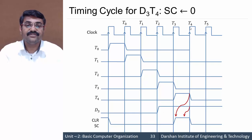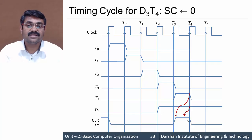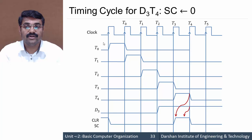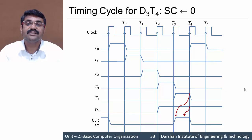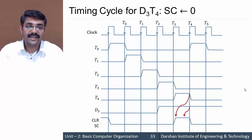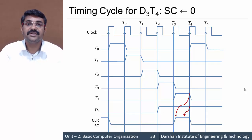After the sequence counter is cleared, its value is 0 and the timing cycle restarts from T0. The cycle of T0, T1, T2 continues again until the sequence counter is made 0 once more. This is how the control unit of a basic computer works. Thank you very much.